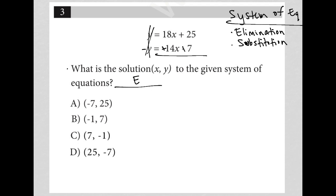Then I'd have 18x plus 14x, which is 32x, and 25 plus 7, which is 32. And of course, that should have been a 0 there since the y's were eliminated.